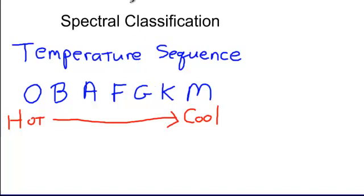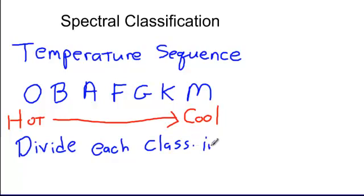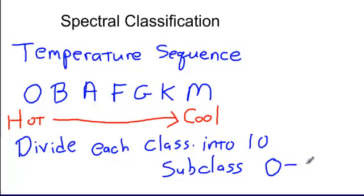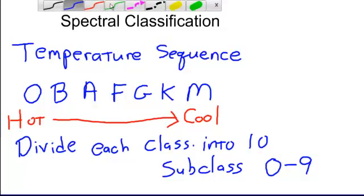Now, one thing I wanted to emphasize is that we also subdivide these classes. So it's not just an O star, but we divide each class into 10 different subclasses. We have letters for the first section, and then we add the numbers 0 through 9 after them. One thing you may be asking is why is the temperature sequence given? Why is it such an odd sequence?